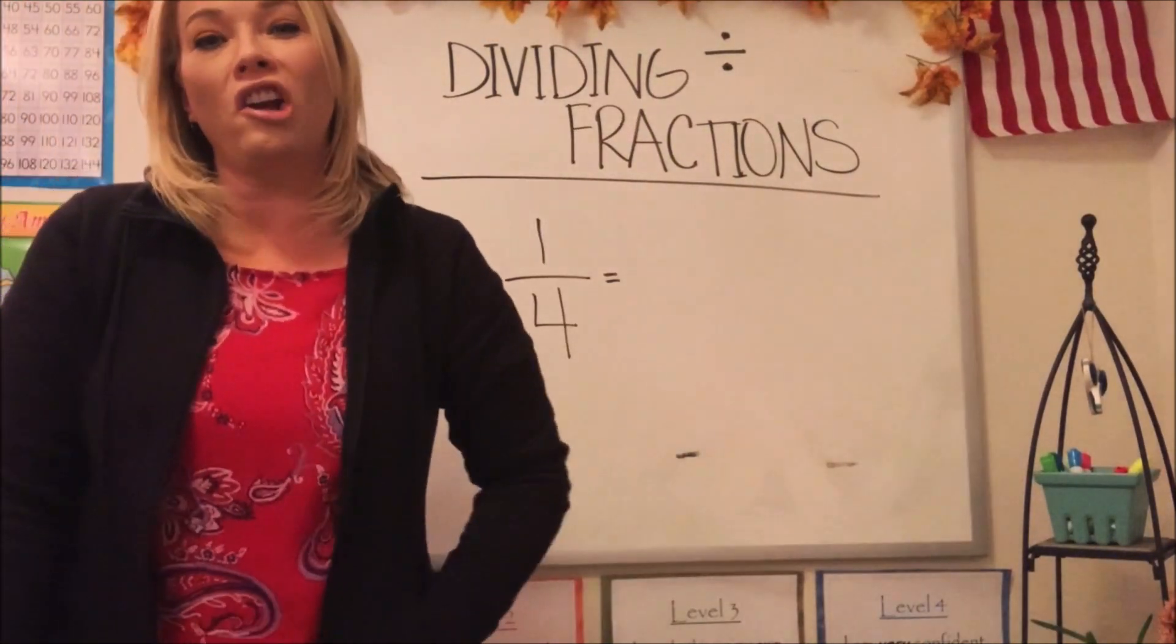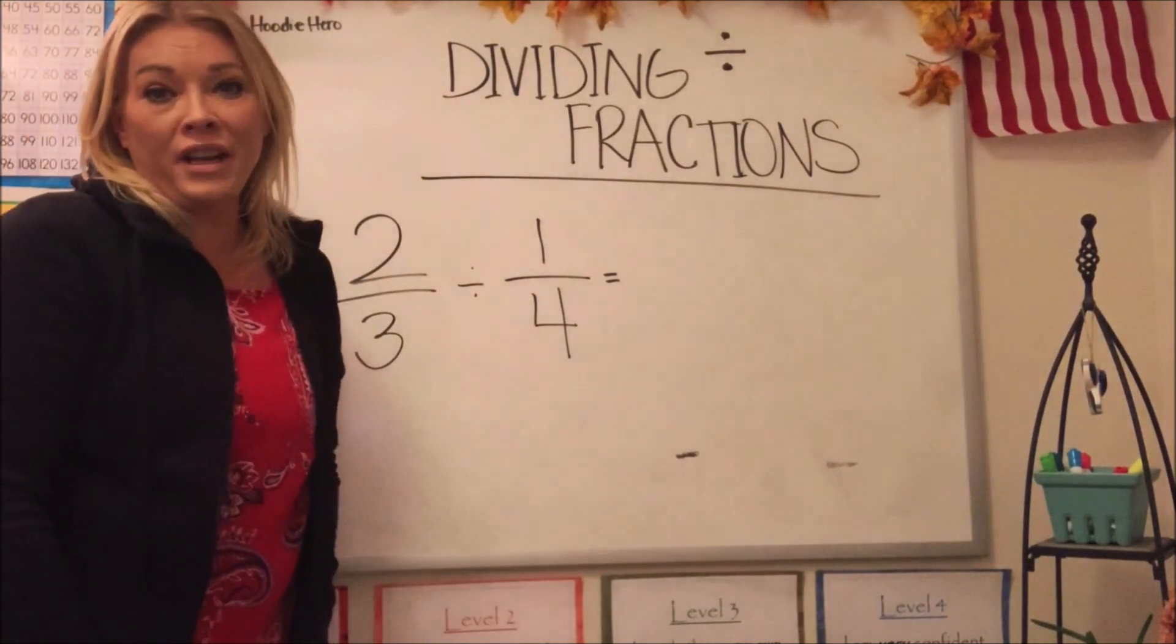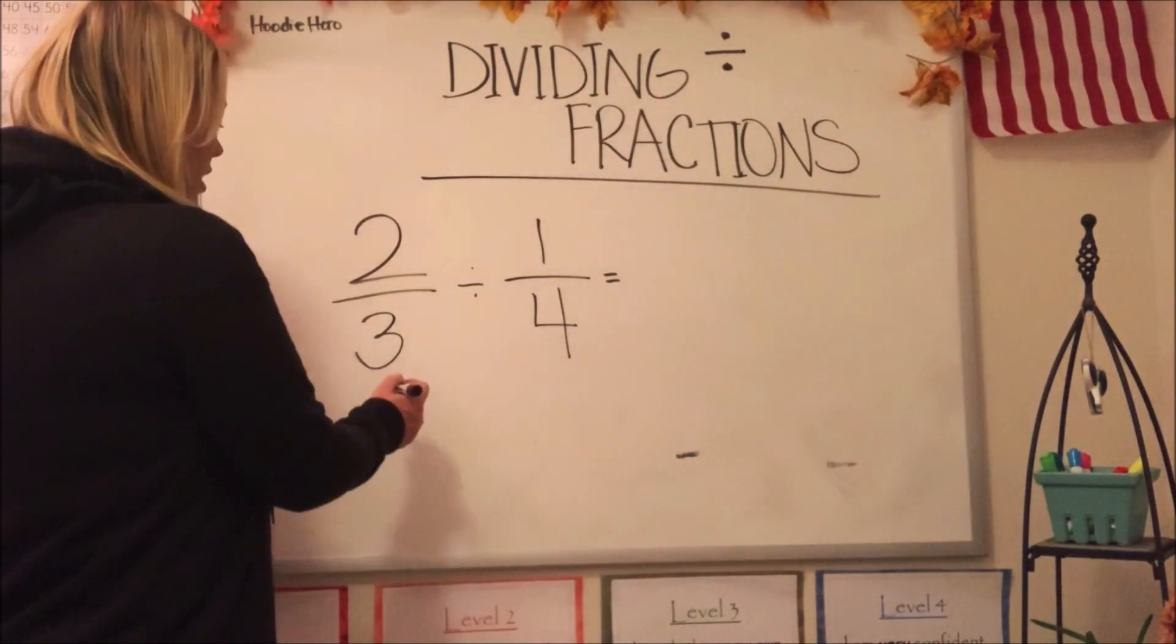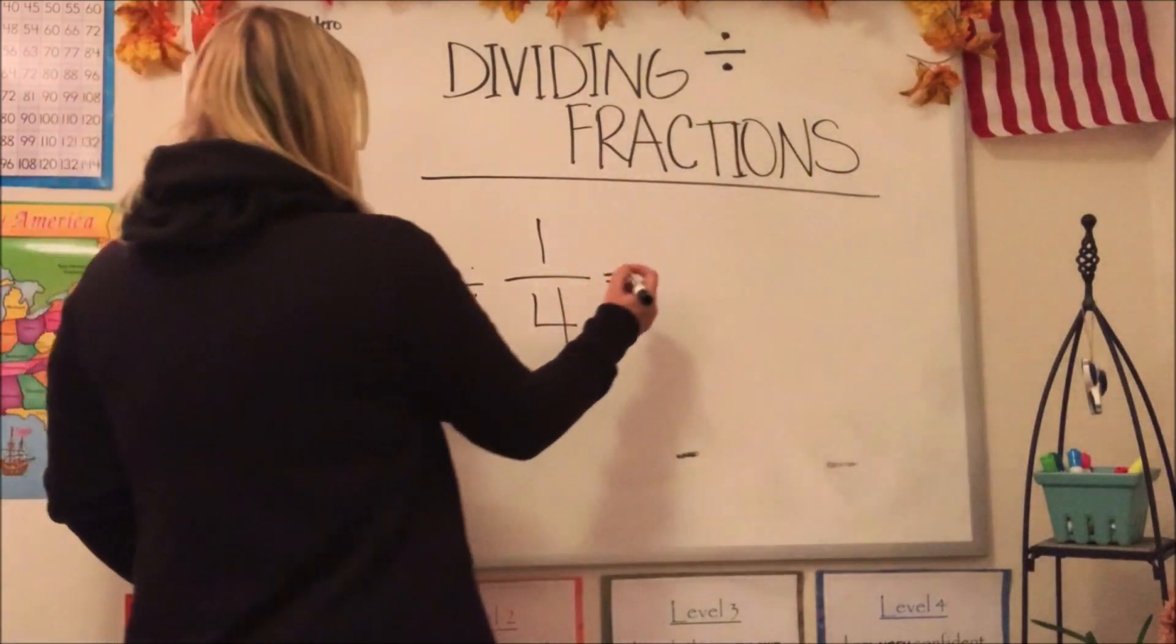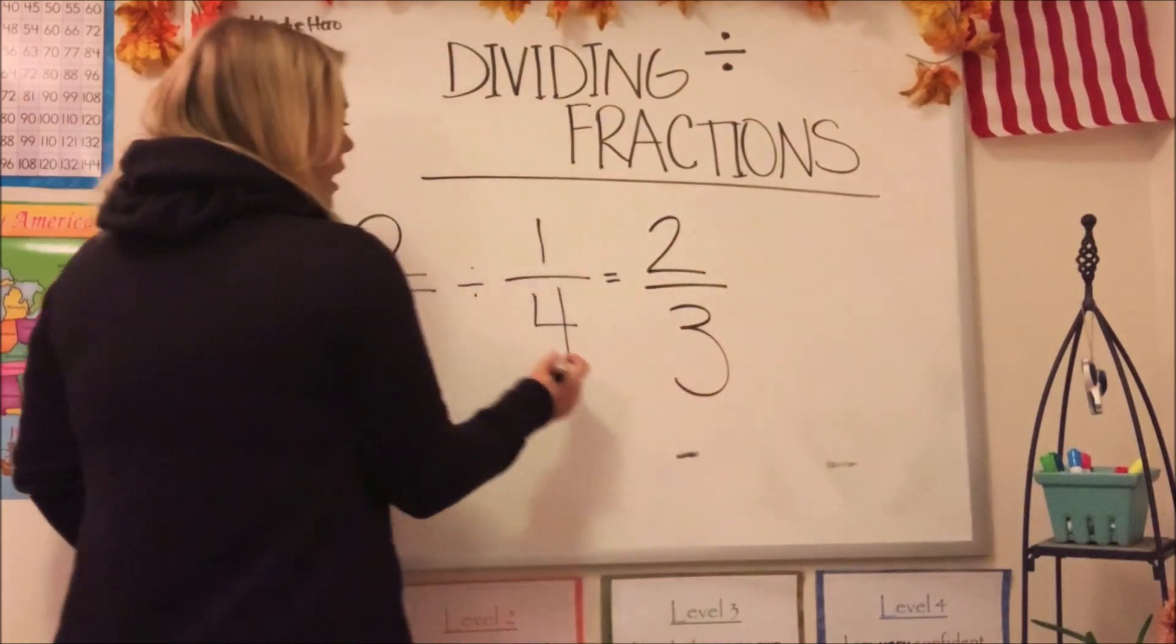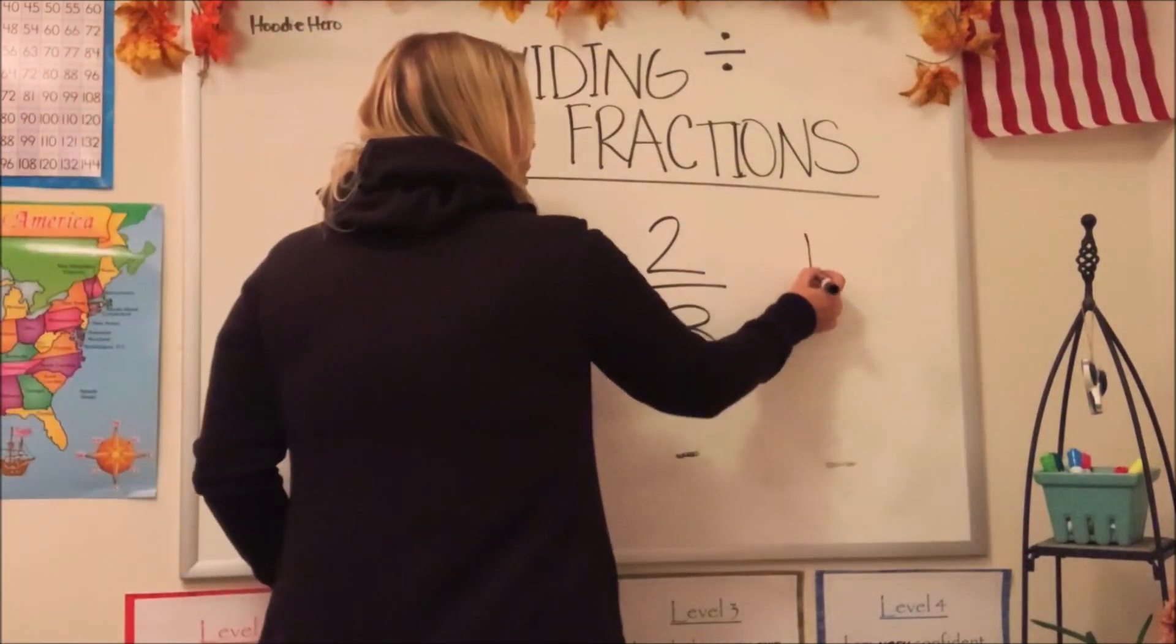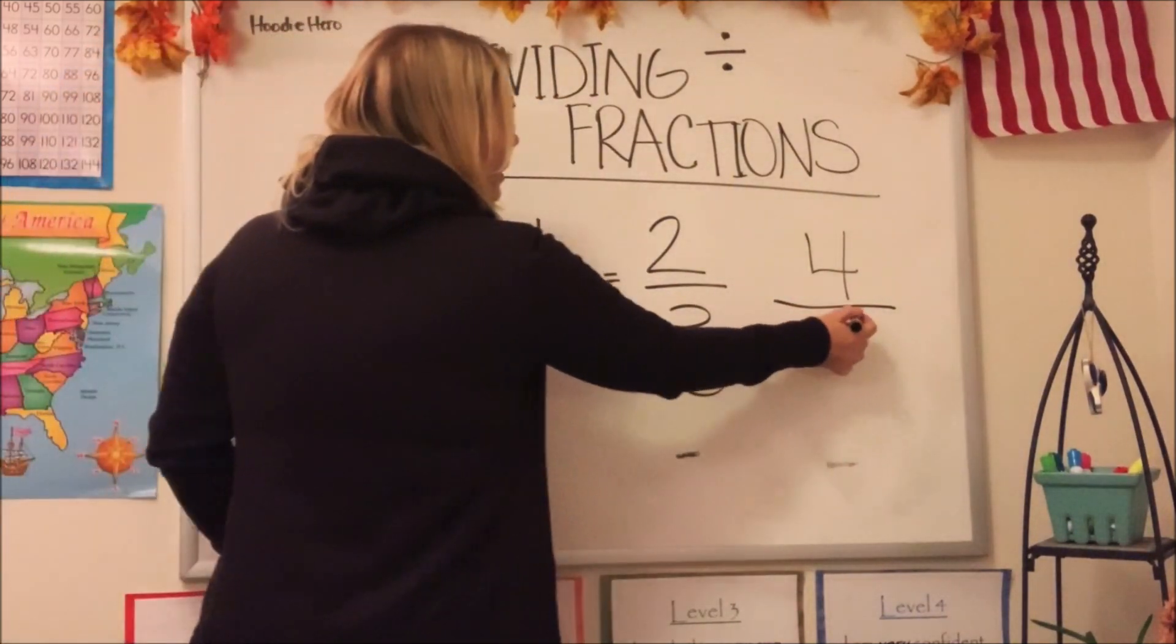Okay, guys, here is our last dividing equation that we're going to do in this video. We have two-thirds divided by one-fourth. Now, we're going to keep the first fraction. So let's reset it, our new problem. So we're going to keep two-thirds and we're going to invert the second fraction. So four is going to become the numerator and one is going to become the denominator.